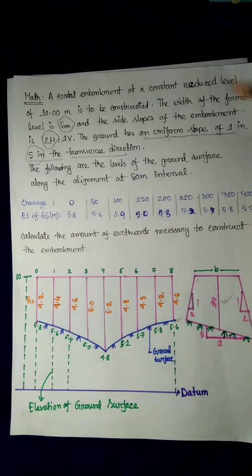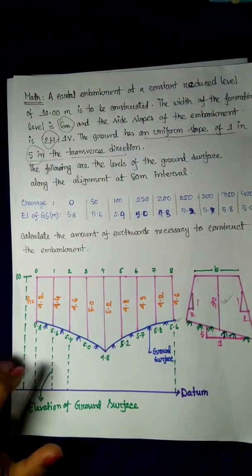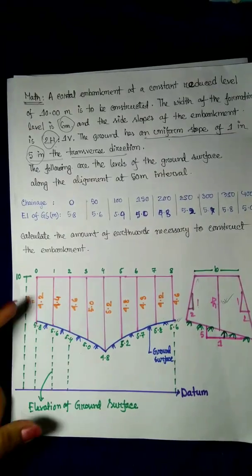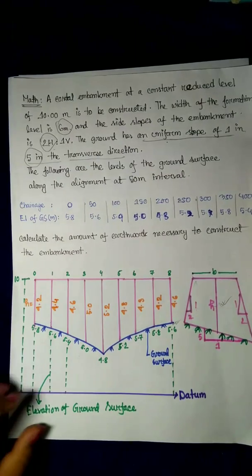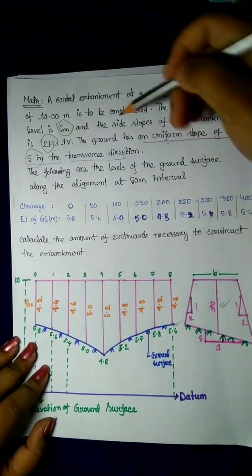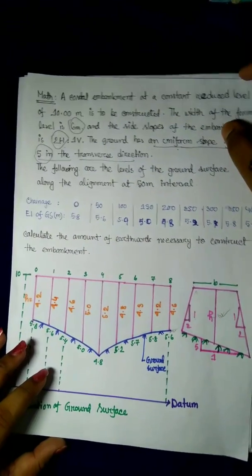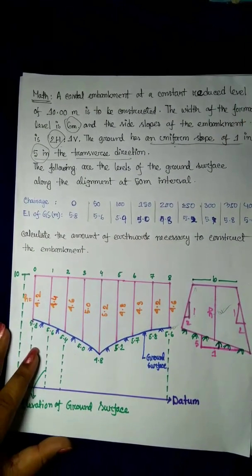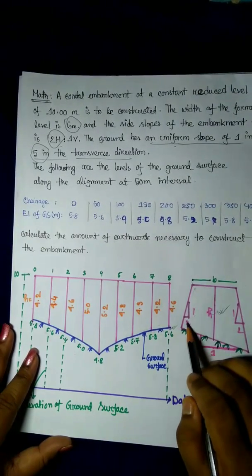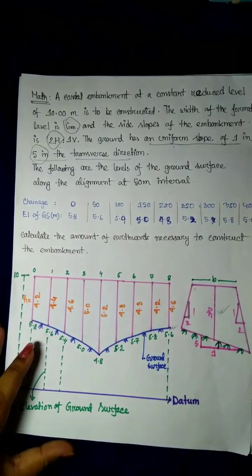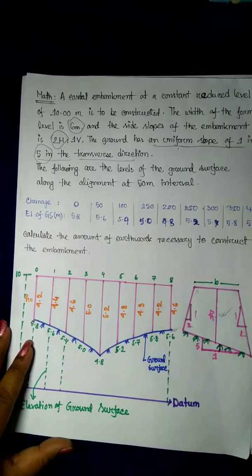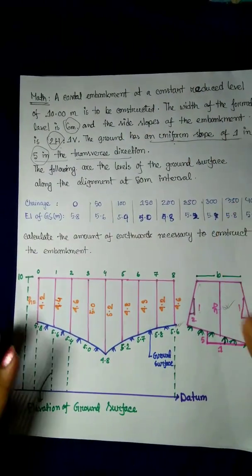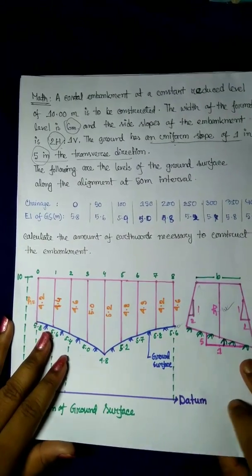A coastal embankment at a constant reduced level of 10 meters is to be constructed. The width of the formation level is 6 meters and the height of the formation level is 6 meters. The side slope of the embankment is 2 horizontal to 1 vertical. The ground has a uniform slope of 1 in 5 in the transverse direction.